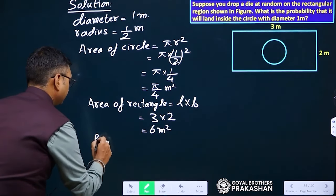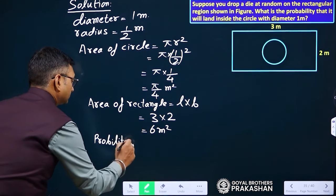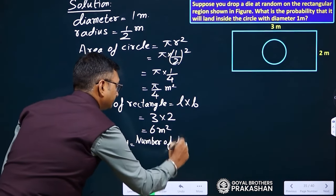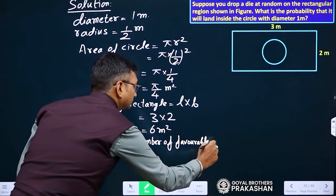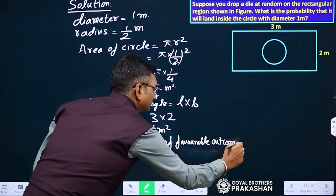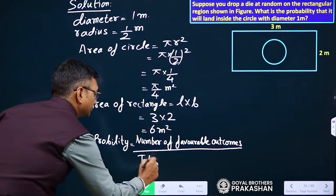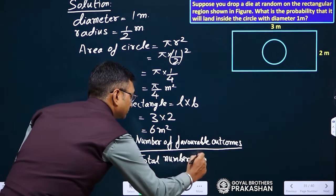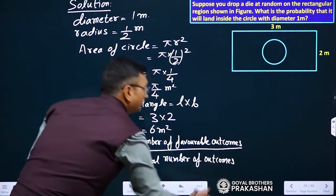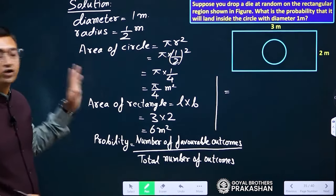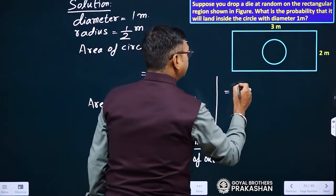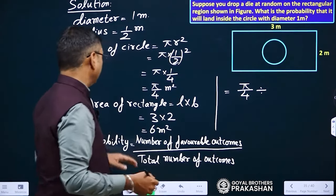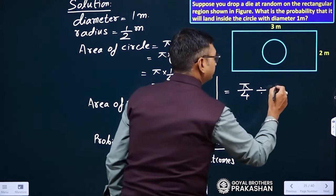Now we will put the formula for probability. Probability formula is number of favorable outcomes divided by total number of outcomes. Total number of outcome means area of circle because die has to land inside the circle, so that is pi by 4 divide by total number of outcome. In our case, total area of rectangle is total number of outcome, so divide by 6.